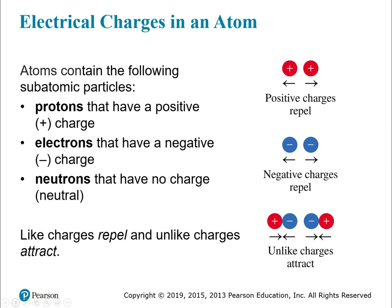Let's talk about the subatomic particles within an atom and their charges. Protons have a positive charge, electrons have a negative charge, and neutrons are neutral — meaning they have no charge. If you have two positive charges or two negative charges they're going to repel — like charges repel. But if you have two opposite or unlike charges, they're going to attract.